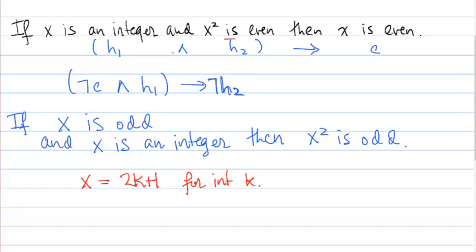So if we started with this statement that x² is even, we'd get that x² is 2k. And in order to get an expression for x, we'd have to take the square root of this, which wouldn't necessarily help us figure out that x is even.